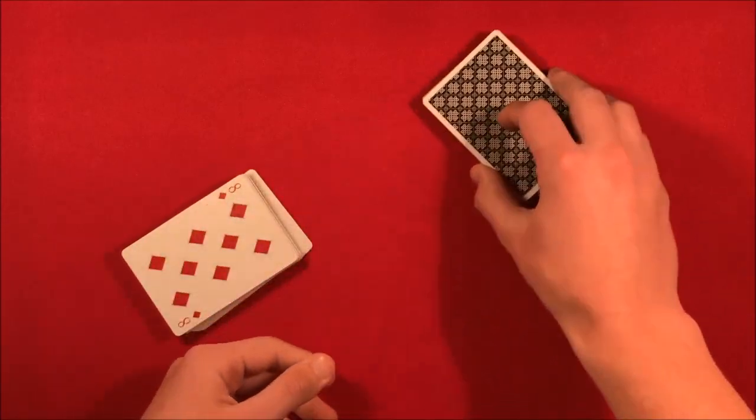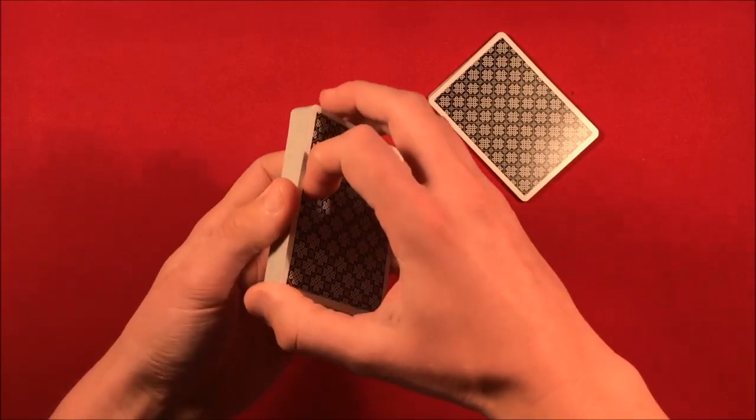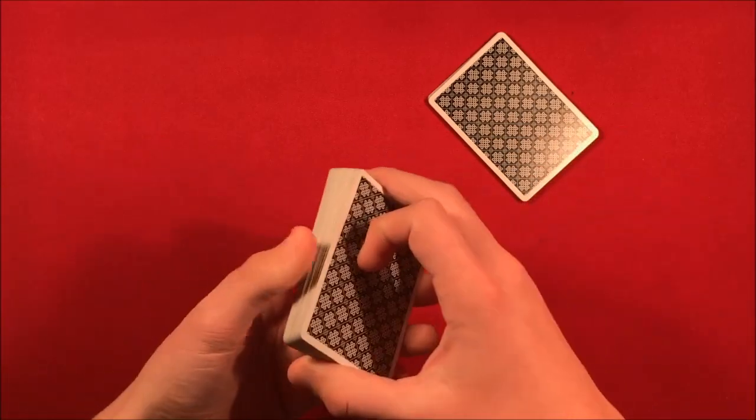He has the spectator grab them, put it near his heart, and what he does is he forces a three. Now he dribbles the cards, okay, but it's very easy for you guys just to do the slip force. It's basically the same thing, you're just forcing the top card.